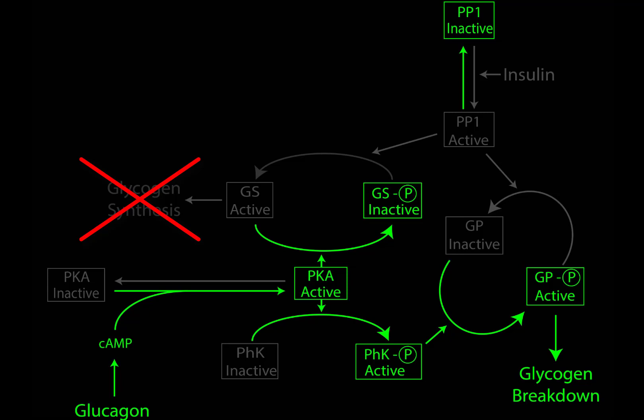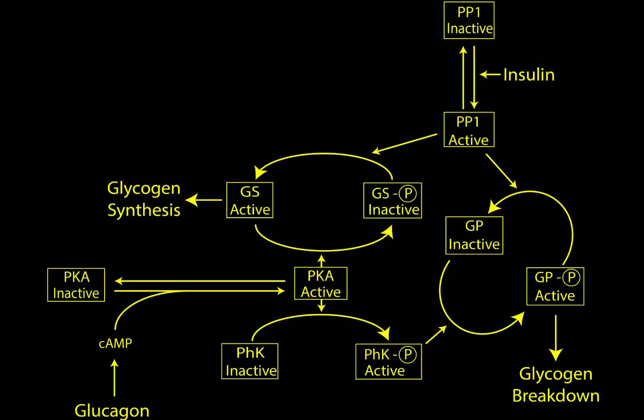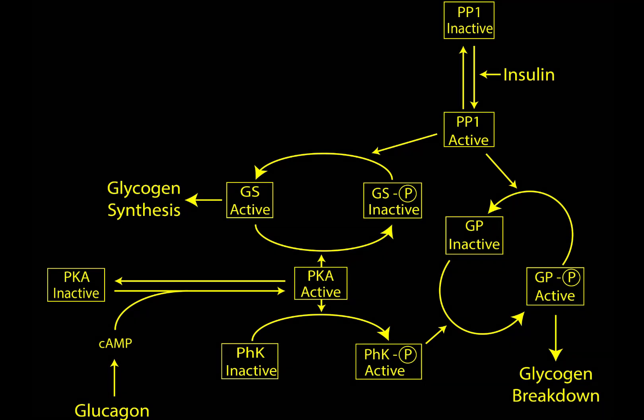So glucagon has the overall impact of turning off glycogen synthesis, but turning on glycogen breakdown. So this ends up being a fairly straightforward regulatory strategy where two different hormones, insulin and glucagon, have opposite effects.